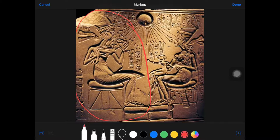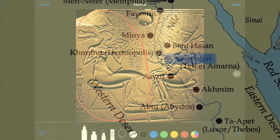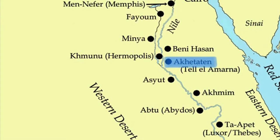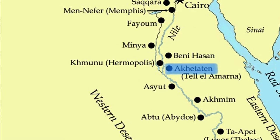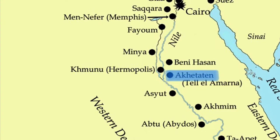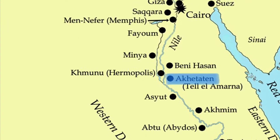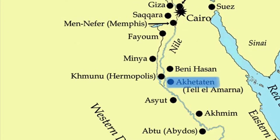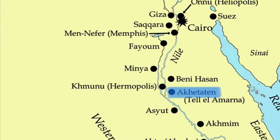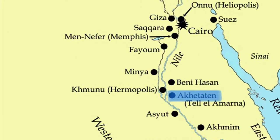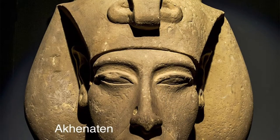During this time period, Akhenaten was the king of New Kingdom Egypt. During his reign, Akhenaten made many changes to Egyptian society. This includes a new capital city that was named Akhenaten, which means the horizon of Aten or sun god.